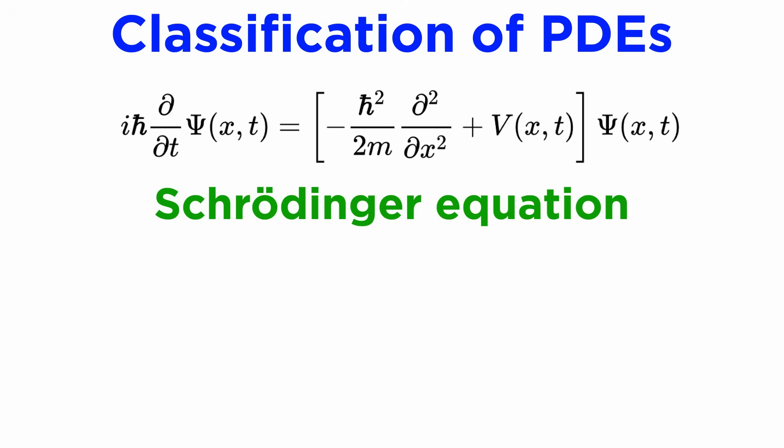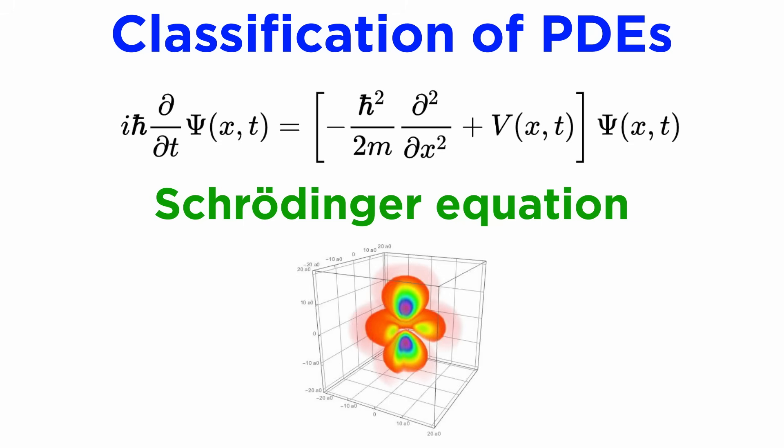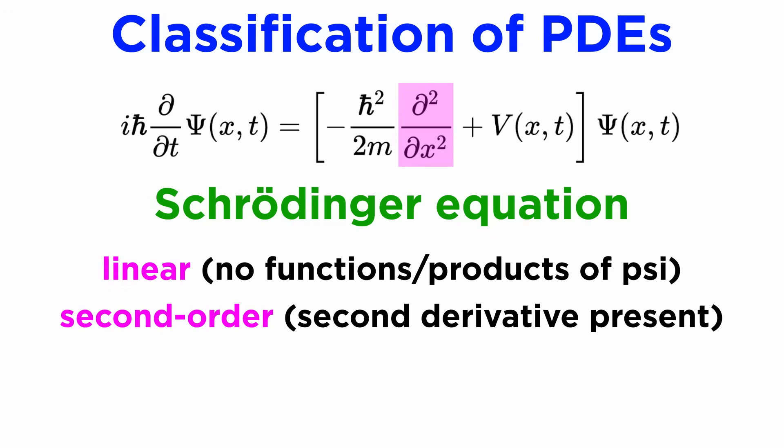And here is the Schrodinger equation, famous for its use at the core of quantum mechanics, where the dependent variable is the complex-valued wavefunction, denoted by the capital letter psi. Like the last example, it is linear, second order, with variable coefficients, due to the function V.